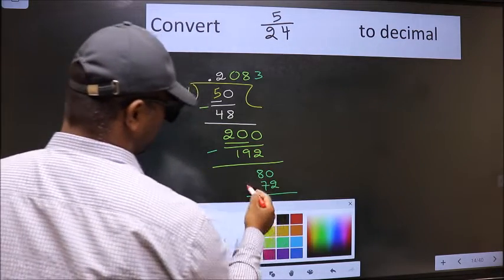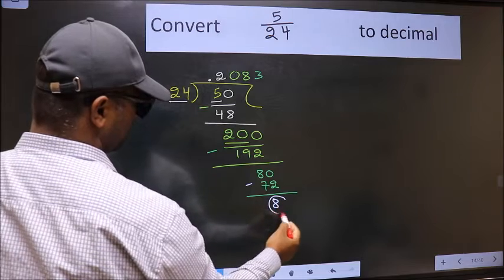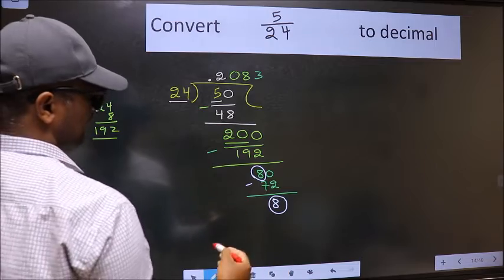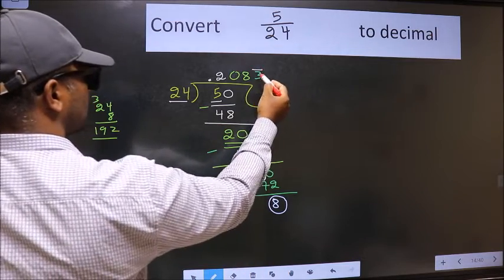Now we should subtract. We got 8 again. Earlier also we got 8. That means we get bar on this number.